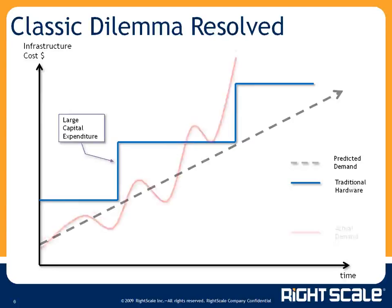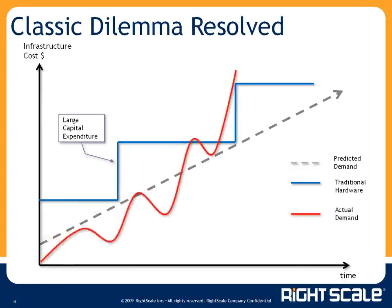Capacity itself is almost impossible to predict. Anyone running a public-facing website will tell you that day-to-day capacity is very difficult to ascertain in advance. Above and beyond that, you never know when you're going to be mentioned on Twitter, hit by a social bookmarking site, or have your company mentioned in the news — and you could have 5x, 10x, a tremendous amount of capacity demand that you would not expect.